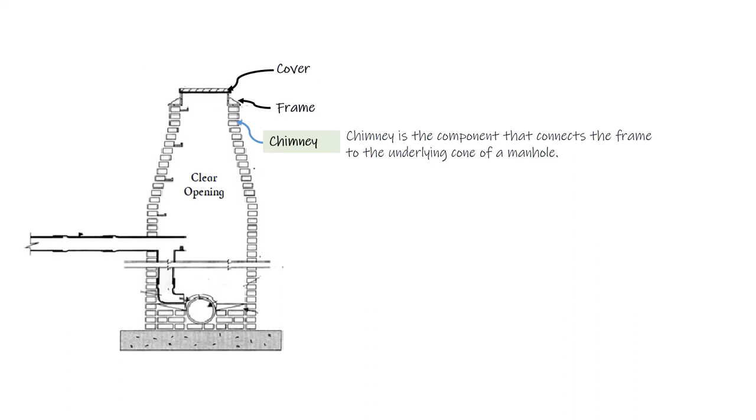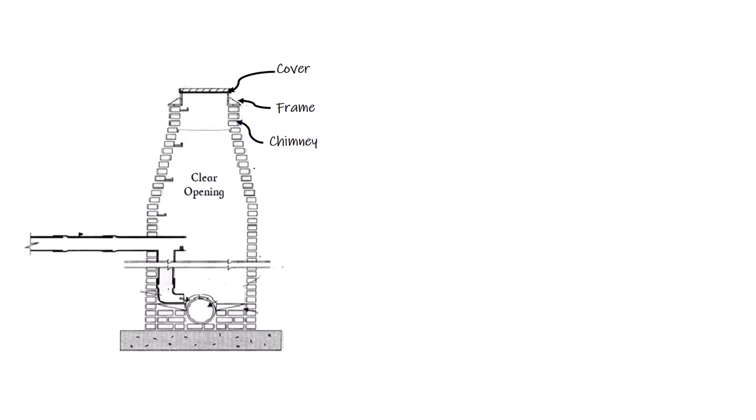Number four: the cone of a manhole. The cone is a tapered transition section of the manhole, as shown, which is installed between the smaller diameter of the chimney and the larger diameter of the wall for a certain depth of the manhole.